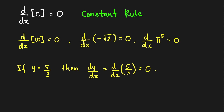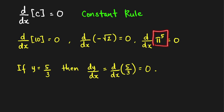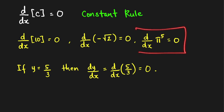Examples: if we're computing the derivative of a constant with respect to x, then this is equal to 0. The derivative of another constant with respect to x is again equal to 0. And the derivative of π raised to 5 with respect to x — π is just a constant, approximate value 3.14, so π raised to 5 is just a fixed real number. It is not changing, so its derivative with respect to x is also equal to 0.